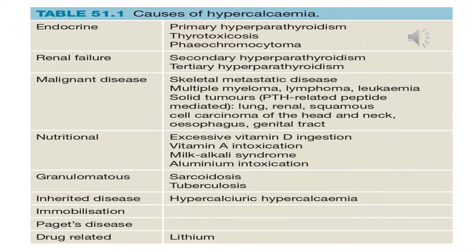The causes of hypercalcemia are either related to endocrine causes — primary hyperparathyroidism, thyrotoxicosis, or pheochromocytoma — or related to renal causes in the form of secondary or tertiary hyperparathyroidism or malignant disease. There are also nutritional causes. However, in our case, the patient only complained of hip joint pain, all investigations were normal, no other complaint, and no chronic illness. Therefore, the most likely diagnosis is primary hyperparathyroidism.